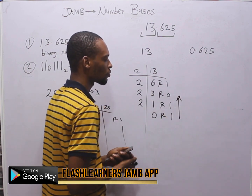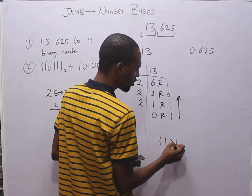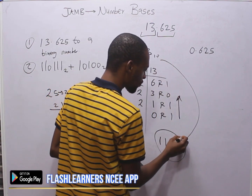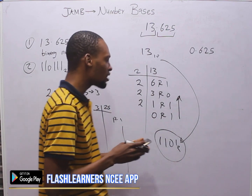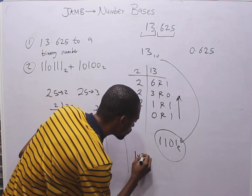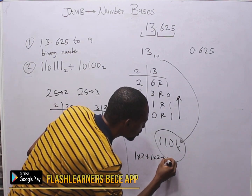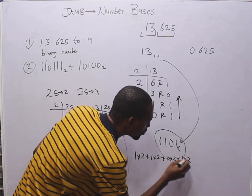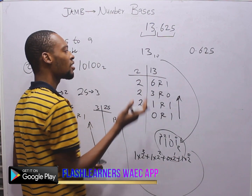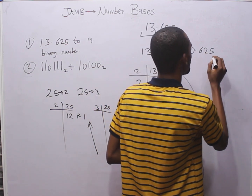Draw your arrow and read from bottom to top: 1, 1, 0, 1 — so 13 base 10 = 1101 base 2. That is how to convert from base 10 to other bases. To confirm, convert back: 1 times 2³ + 1 times 2² + 0 times 2¹ + 1 times 2⁰, with powers 0, 1, 2, 3. Solving this should give you 13.